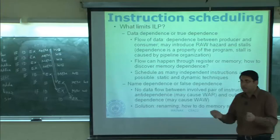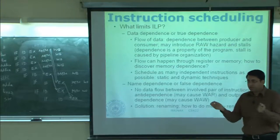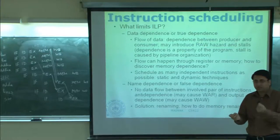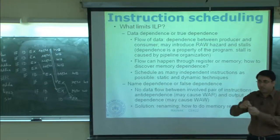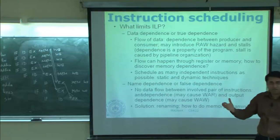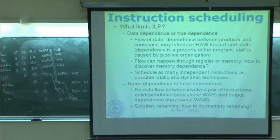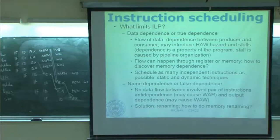How do you discover register dependence? You just compare the source of one instruction and the target of another — if they match, there is a dependence. But memory dependence is not so easy. Consider a store that stores register R2 to address 100+R3, and then later a load that loads from some address into a register. It turns out these two are actually at the same address — that can happen.